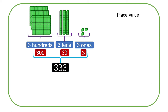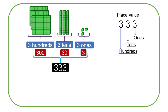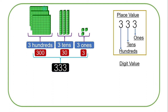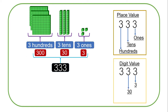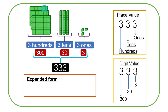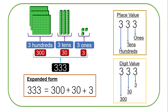Now let us focus on place value. The place value of the first three is ones, the next is tens, and the next is hundreds. For the digit value, we have got three, 30, and 300. The expanded form of three hundred and thirty-three is 300 plus 30 plus three.